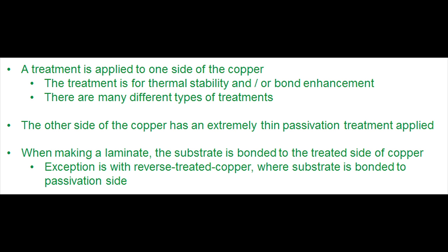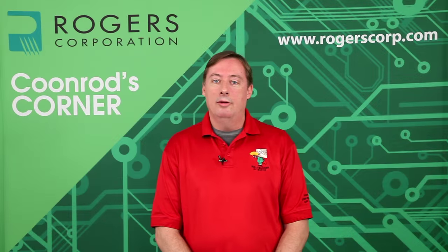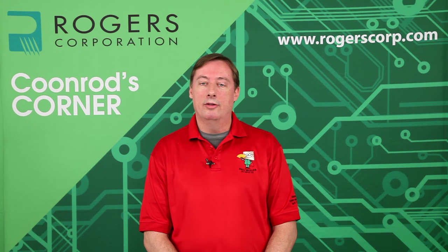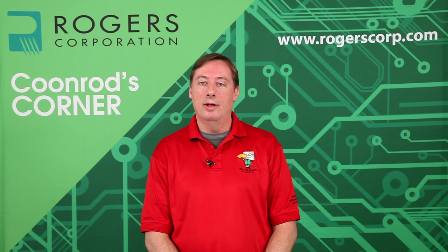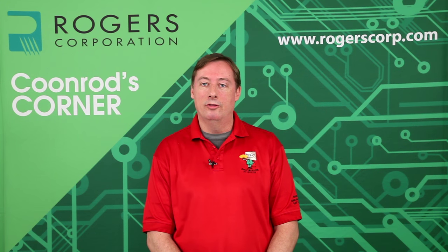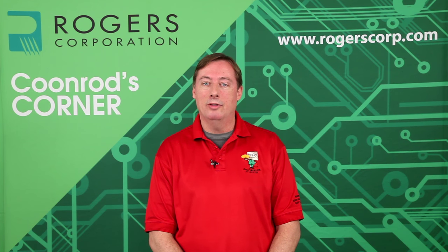The one exception is reverse treat copper, where the substrate is bonded to the shiny, passivation-treated side when making the laminate, and the treated side faces outward — that's what the user would see. Due to the grain structure of these different coppers, you get different surface roughness. ED copper gives you a rougher surface by nature of its grain structure, while rolled copper gives you a much smoother surface.